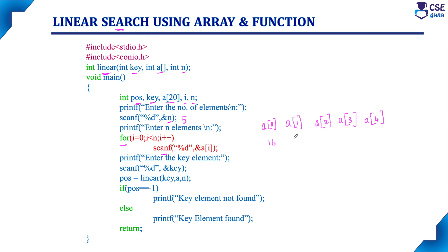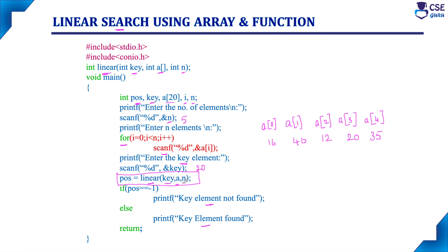Now, enter the elements. For example, 16, 40, 12, 20, and 35 we have entered. This is the array of elements. From this array, if you give the key value, it will search in the array and return which position the key element is found. If you have entered any element not present in the array, the program will return 'key element not found in the array'. We enter the key element — any key element we can enter. This is the function call to the user-defined function, sending three parameters: key value, the array a, and n value 5. For example, key value is 20, n value is 5, and the array is a[0] to a[4]. Now we will check with the logical user-defined function.